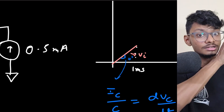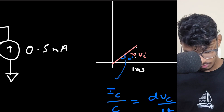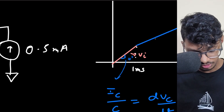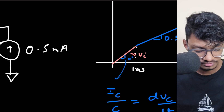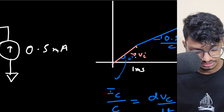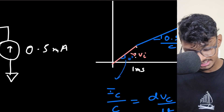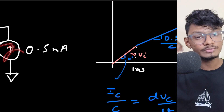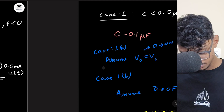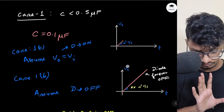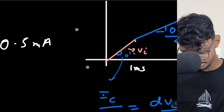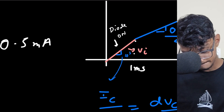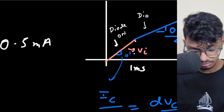After 1ms the slope changes — it's now slower than the input slope because the charging is only from the current source. The slope becomes 0.5 mA / C. The capacitor voltage never returns to 1V because the current source keeps increasing it, and the input never exceeds 1V again. So the diode is on from 0 to 1ms and then off forever after.